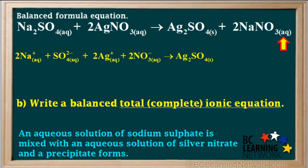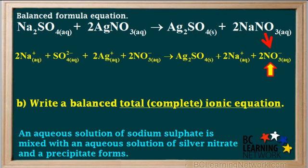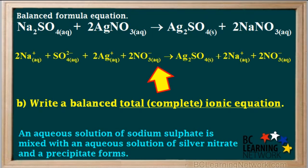Now the other product, sodium nitrate, is aqueous, so we must break it up into its ions. We write 2 Na+ AQ here, and 2 NO3- AQ here. Remember the coefficient 2 in front of the NaNO3 means there are two sodium ions and two nitrate ions — make sure you add the coefficient 2 to both of these ions. So now we've finished the total ionic or complete ionic equation. It's good at this point to check this by adding up the total ionic charges on both sides and see if they're equal.